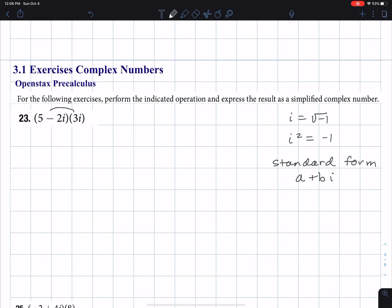And I'm just multiplying by the distributive property, so I'll have 5 times 3i, and then I'll add negative 2i times 3i.